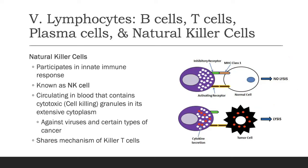Natural killer cells, or NK cells, play a role within our innate immune response, unlike B cells, T cells, and plasma cells which work in the adaptive response. NK cells are nonspecific — they circulate in the blood and contain cytotoxic cell-killing granules in their cytoplasm. When they recognize a pathogen or an abnormal cell such as a cancer or tumor cell, they release those granules and cause the bad cell to undergo lysis, essentially killing it. They share this mechanism with cytotoxic T cells. NK cells are particularly effective against cancer cells and virus-infected cells.